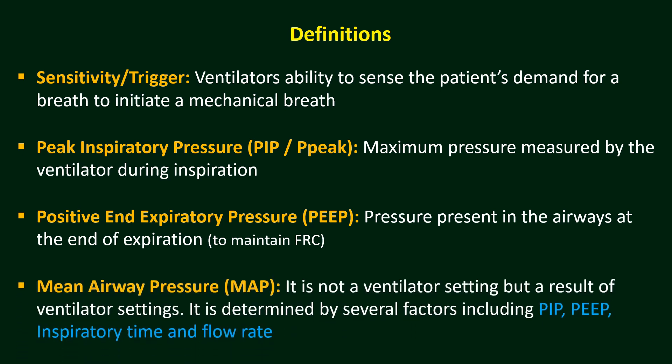Mean Airway Pressure is a ventilator parameter, but we don't set it directly. It is determined by several factors including PIP, PEEP, Inspiratory Time, and Flow Rate. The machine usually calculates this automatically according to the PIP, PEEP, Inspiratory Time, and Flow Rate settings.